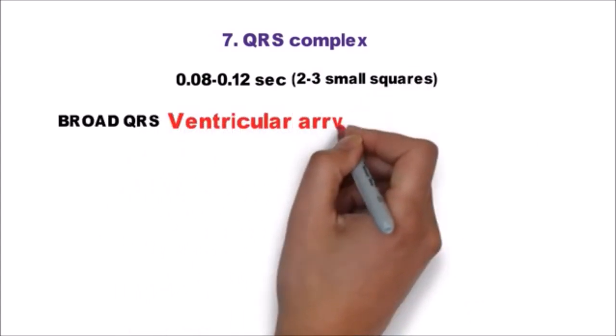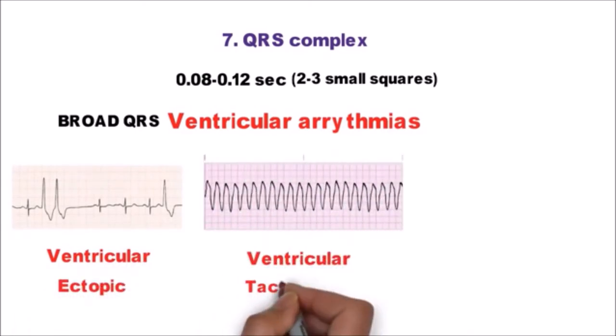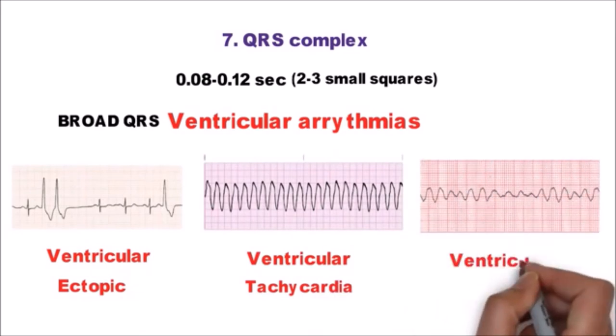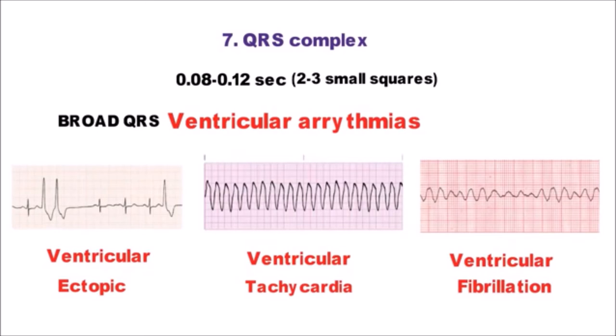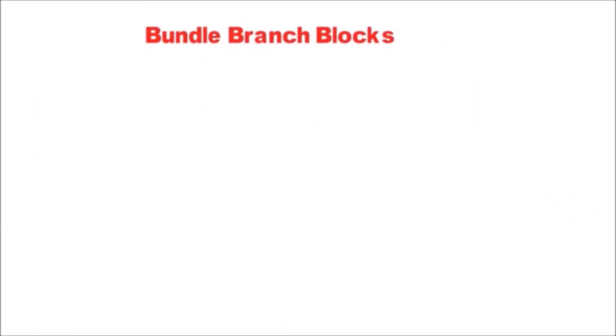It is widened in ventricular arrhythmias which can be ventricular ectopic or ventricular tachycardia or ventricular fibrillation or any pathology below bundle of His. QRS is also widened in bundle branch blocks.